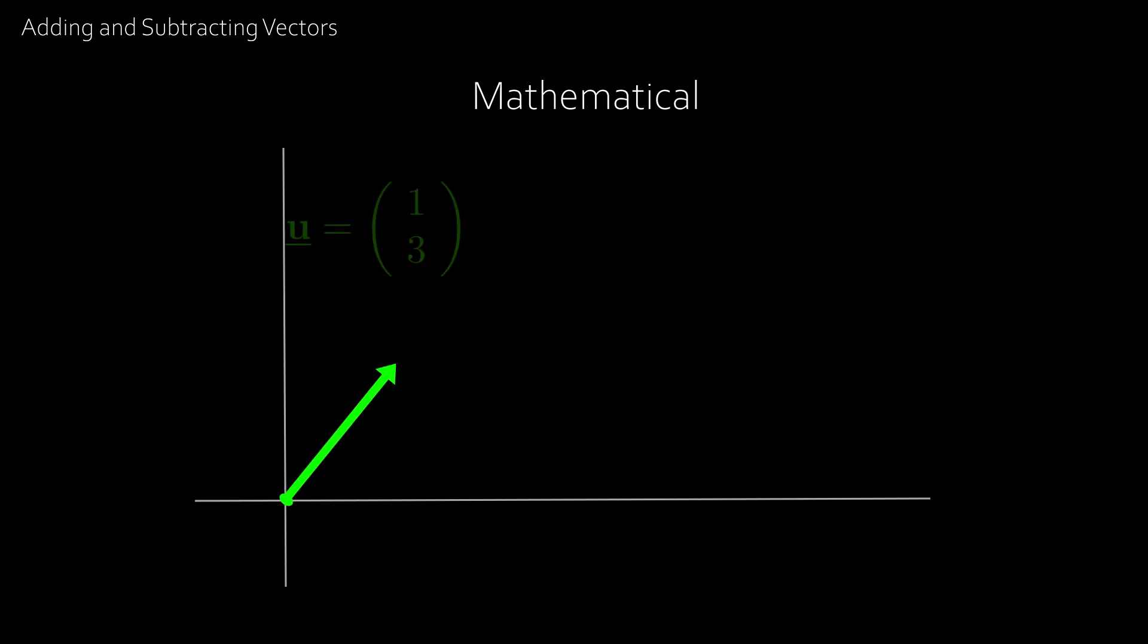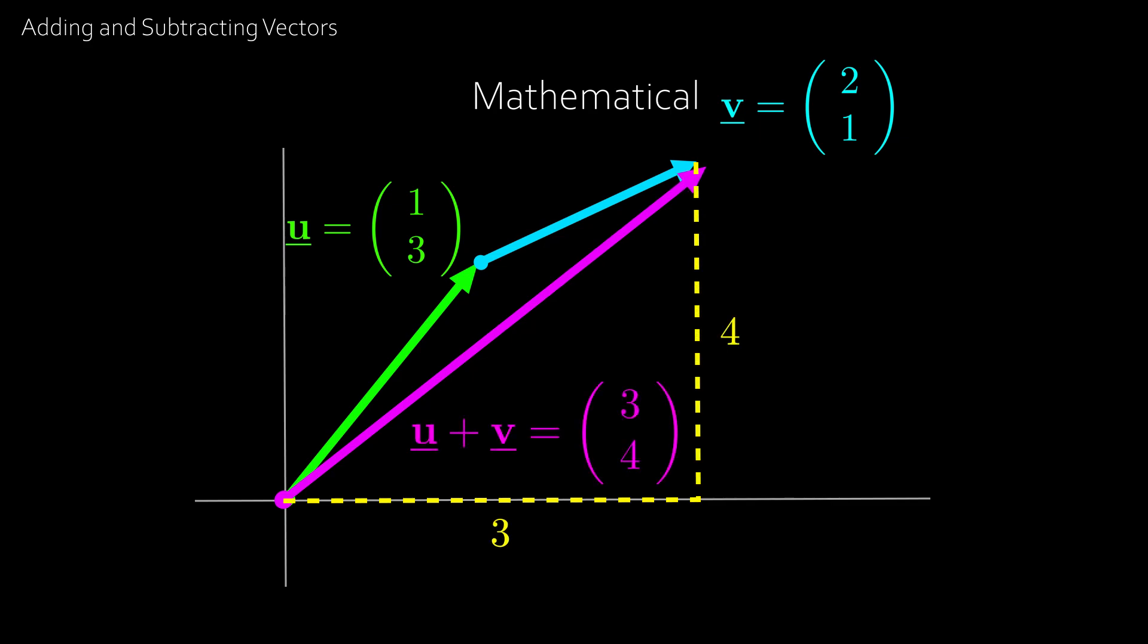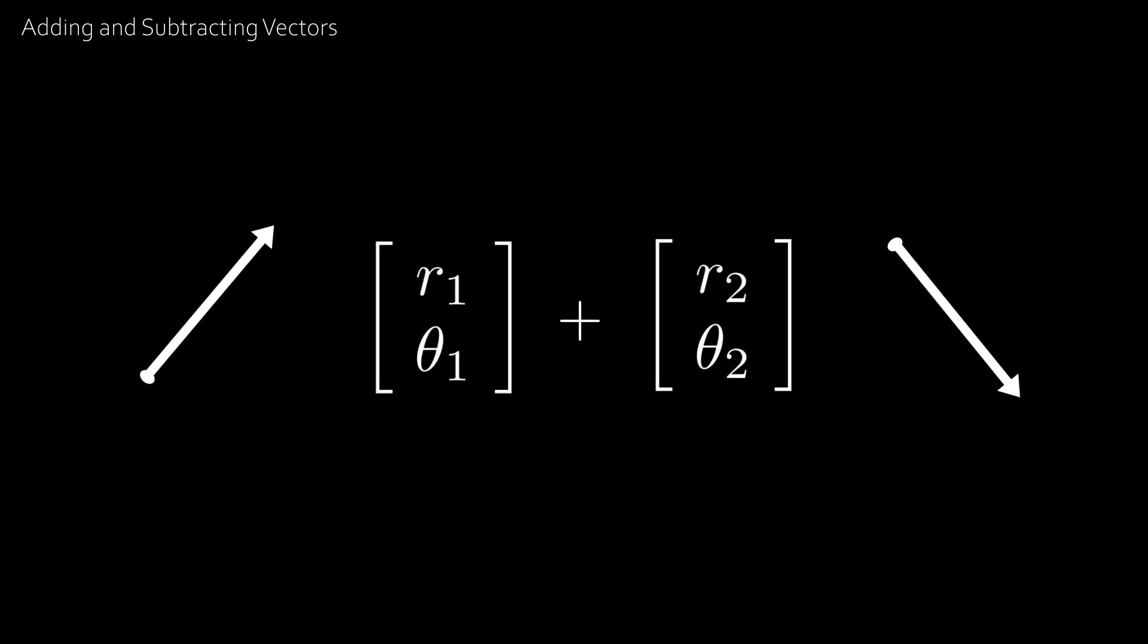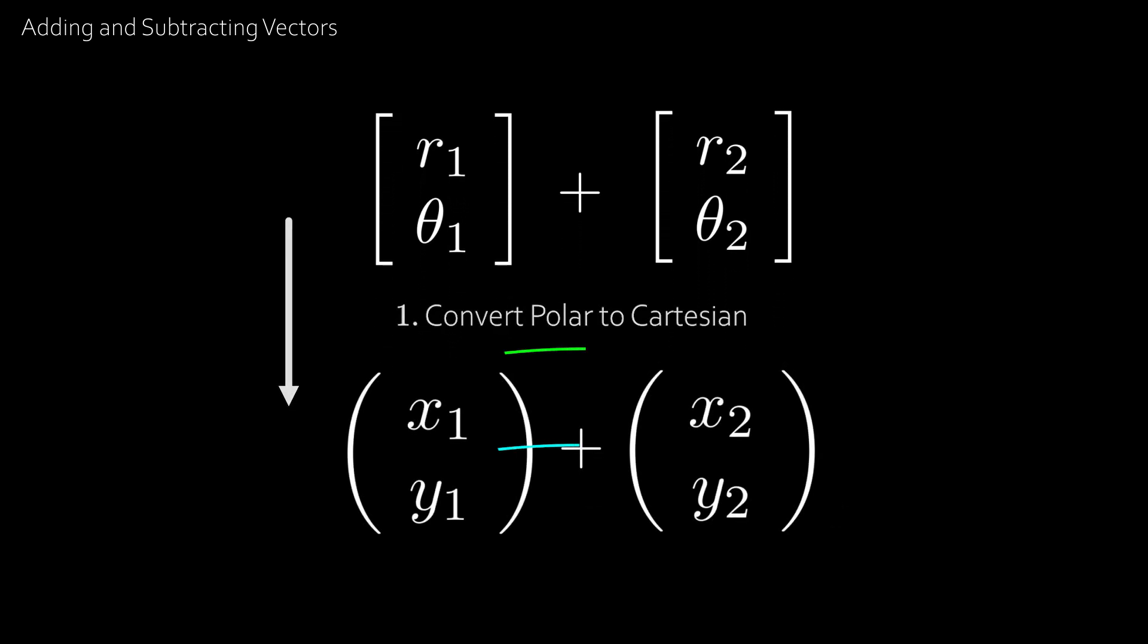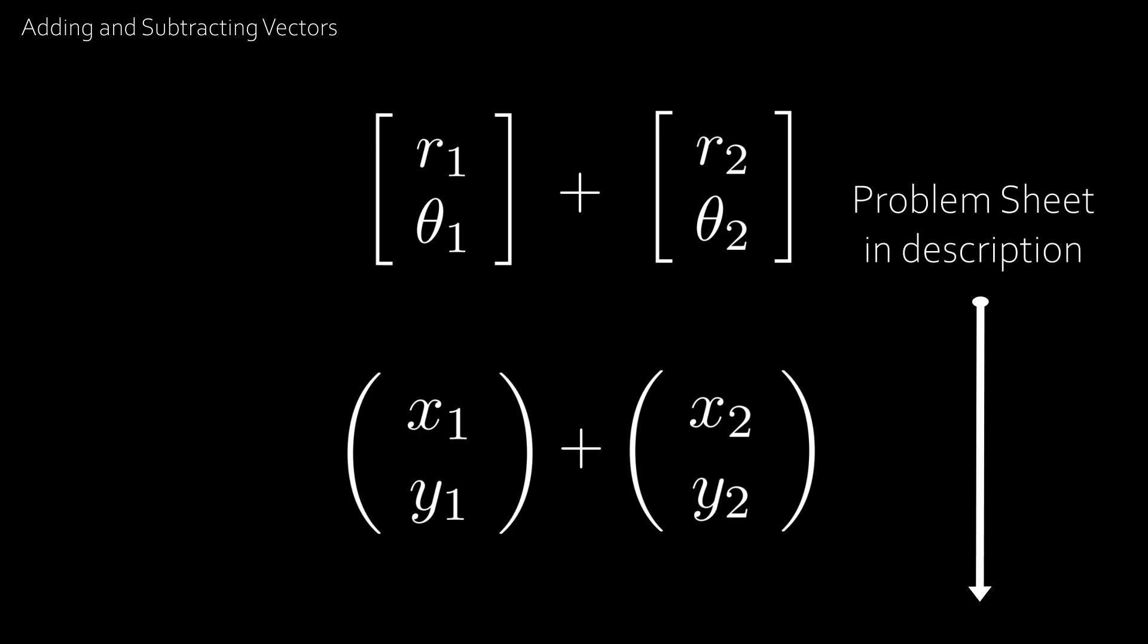If we have the vector u equal to 1, 3, which means we go 1 across and 3 up, and then we move across v, which is 2 across and 1 up, then you can see the final vector would be the same as going 3 across and 4 up. So, what's wrong with adding vectors with a polar system, that is, the one with the distance and direction as its elements? Well, if you add the top and bottom rows separately, we always end up with some crazy vectors that don't actually make any sense. In order to actually add these two vectors, we need to convert them to Cartesian vectors first, then add, and then finally convert back to polar. And if you're curious on how you would actually do this, check out our free problem sheet linked in the description below.